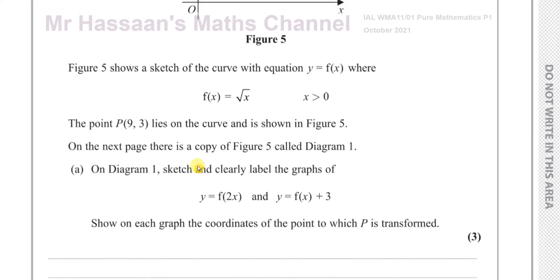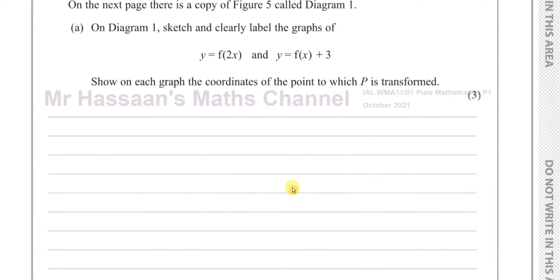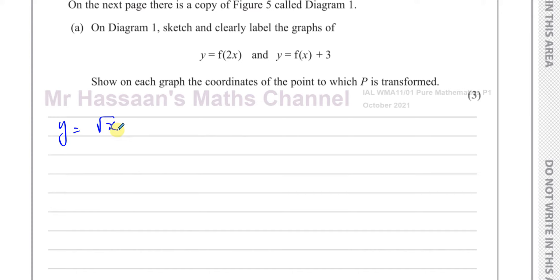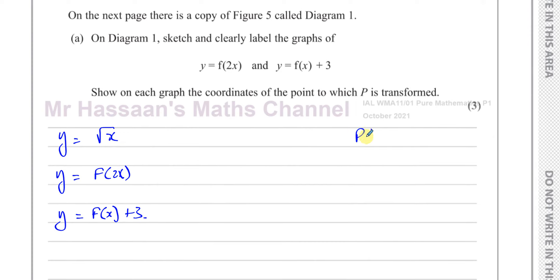So we have the graph of y equals f(2x) and y equals f(x) + 3. Our original graph is y equals the square root of x. We have to draw y equals f(2x), y equals f(x) + 3, and give the new coordinates of the point P, which is (9, 3) — the image of that point. For f(2x), the x has been replaced by 2x.